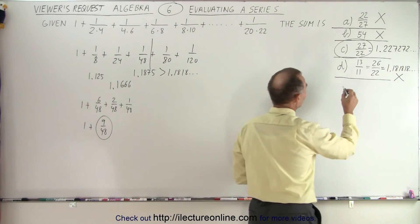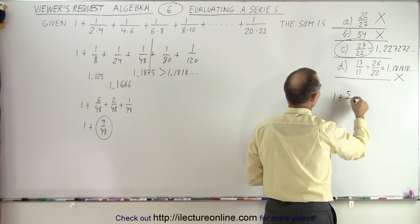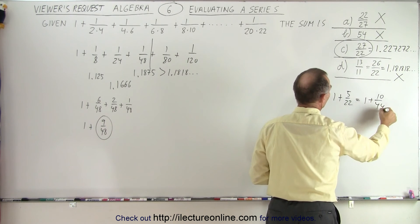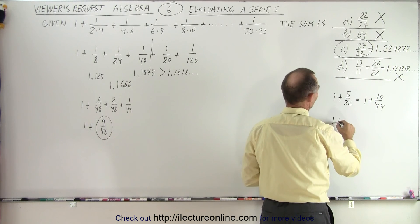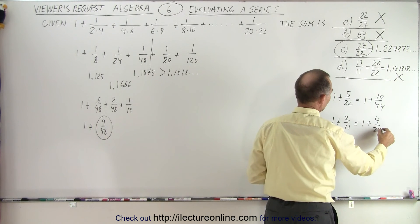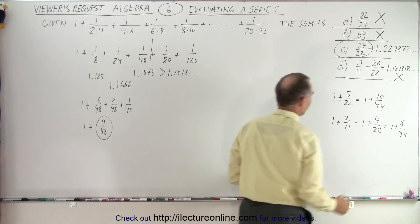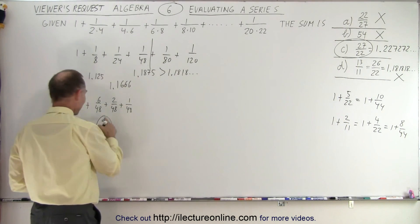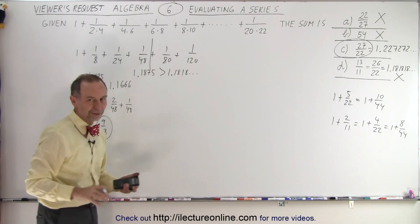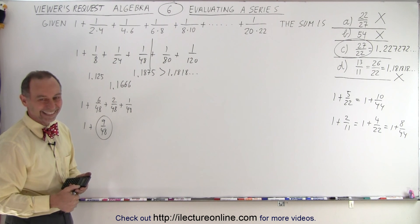Yeah, let's see. You could, so for answer C, you have 1 plus 5 over 22, which is 1 plus 10 over 44. On answer D, you have 1 plus 2 over 11, which is equal to 1 plus 4 over 22, which is 1 plus 8 over 44. And here you have 9 over 48. 9 over 48 is bigger than 8 over 44, so this one or this another way.